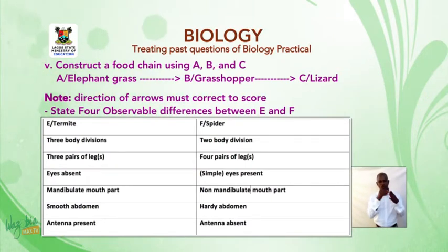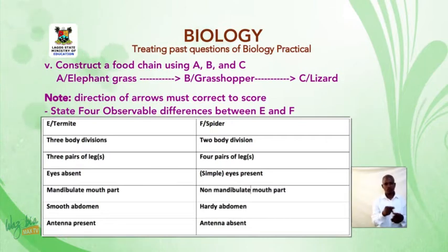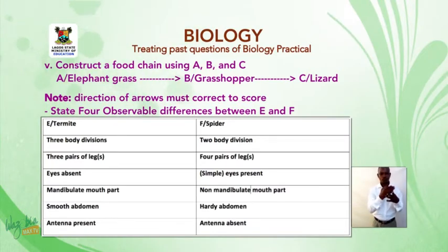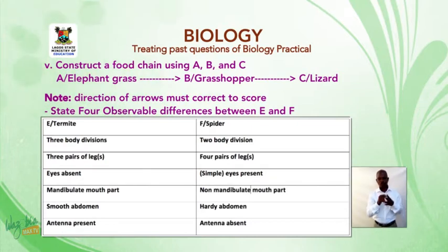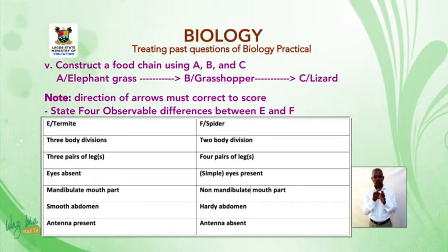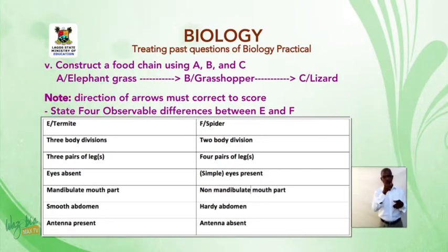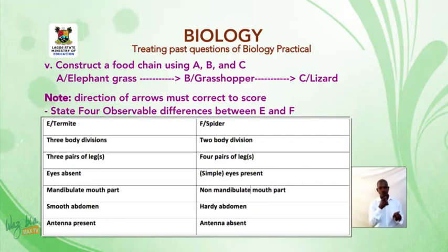State four observable differences between E and F. In this question, you are expected to use features that you can observe from the two specimens, that is termite and spider. When answering difference questions, it is always better to tabulate your answer so the examiner can clearly see what you are saying. Even for similarities, let your answer be in tabulated form.